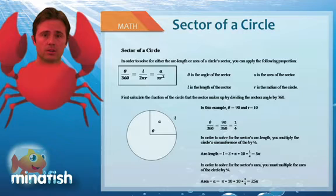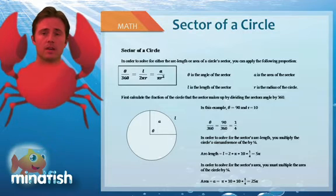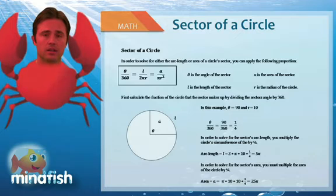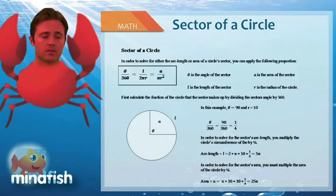Now if we want to solve for the sector of the circle, we first solve for the area of the circle, which would be πr squared. In this case with r is 10, it would make that 100π. And then we only need 1 fourth of that, so we divide by 4 yielding 25π.